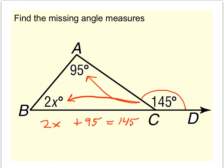So if we subtract 95 from both sides, we see 2x is equal to 50, which means x in this case would be 25. So that means that this angle would be 2 times x, or 2 times 25, so it would be 50 degrees.